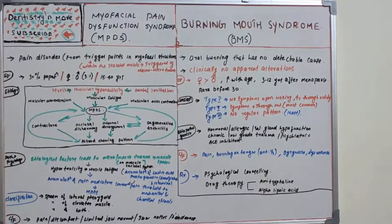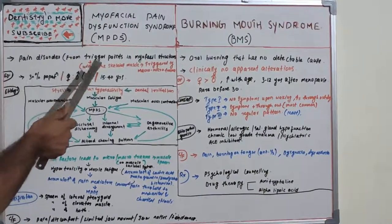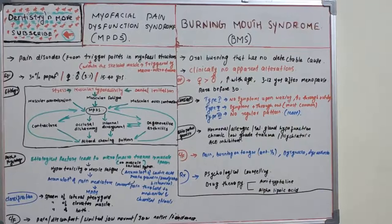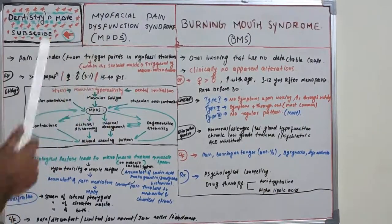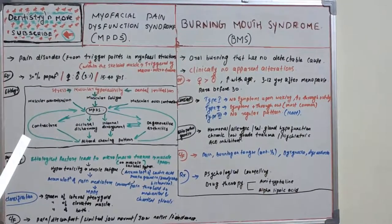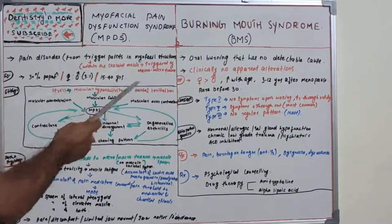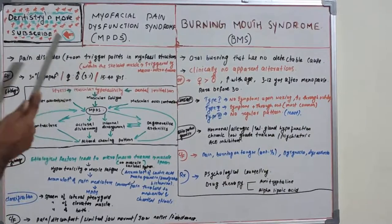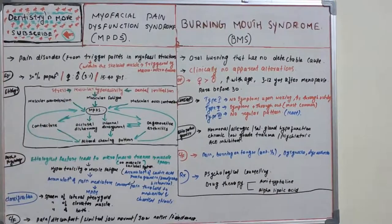Myofascial Pain Dysfunction Syndrome (MPDS) is a pain disorder originating from trigger points in myofascial structures. These trigger points are within skeletal muscle and are triggered by macro or micro trauma to these structures. It affects approximately 30% of the total population, with a 3:1 female predilection, and is most commonly seen in the middle age group of 15 to 40 years.